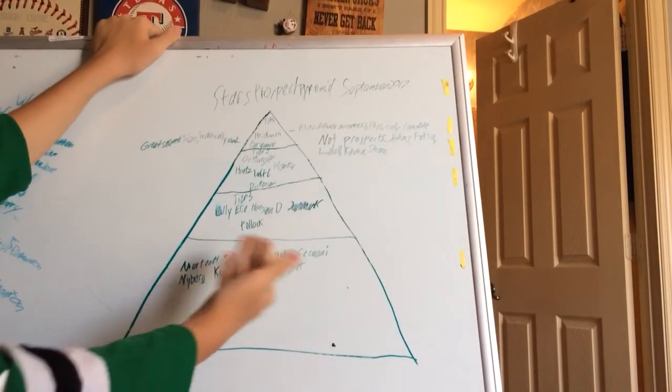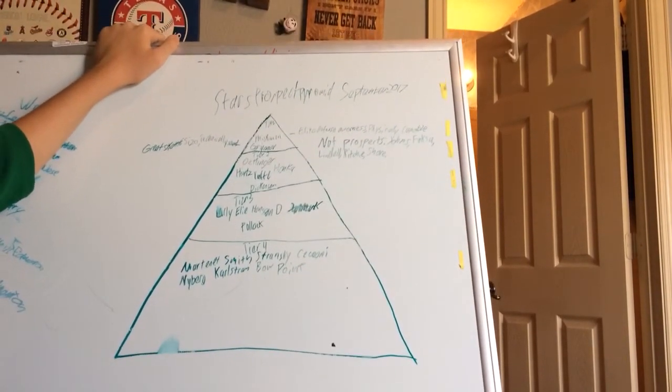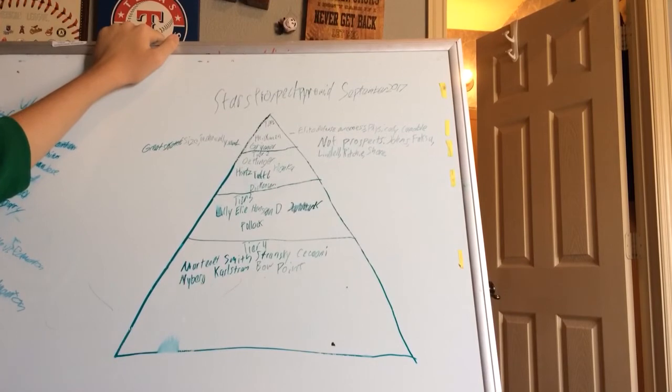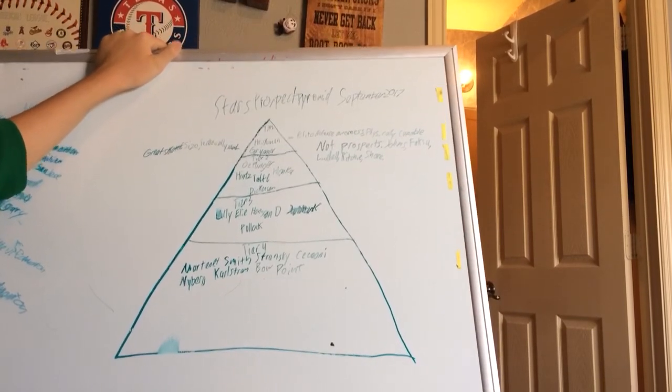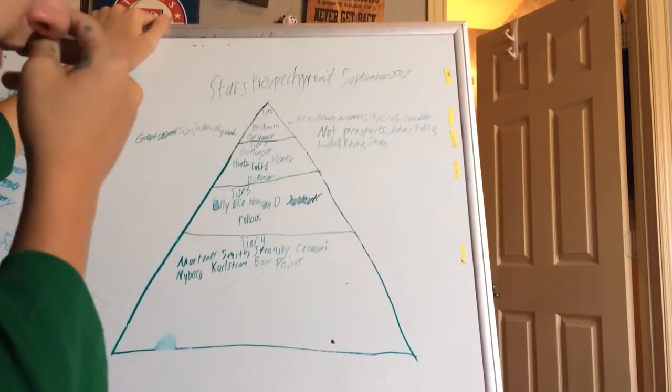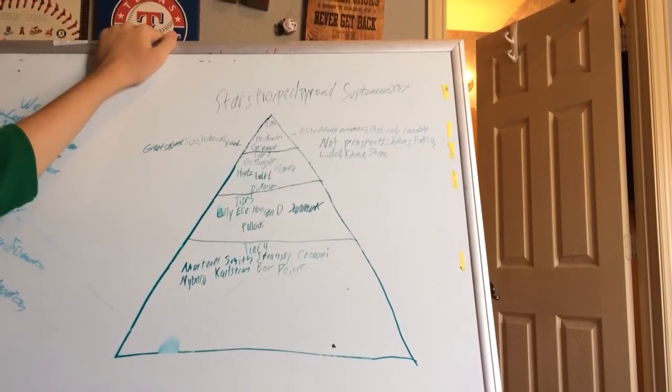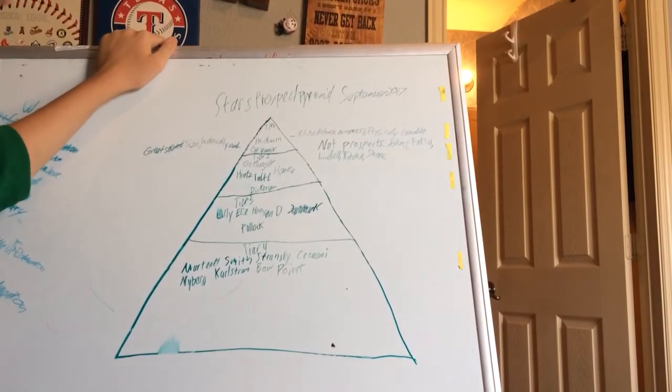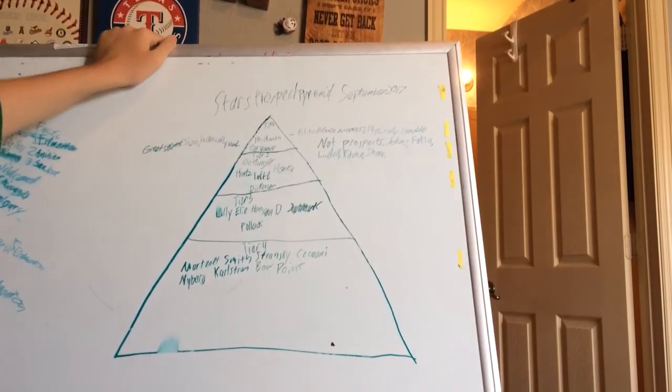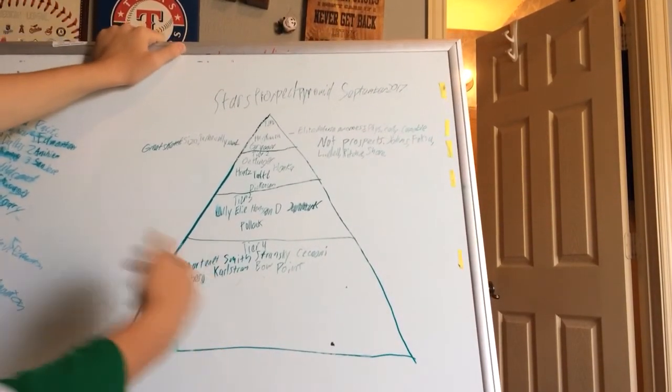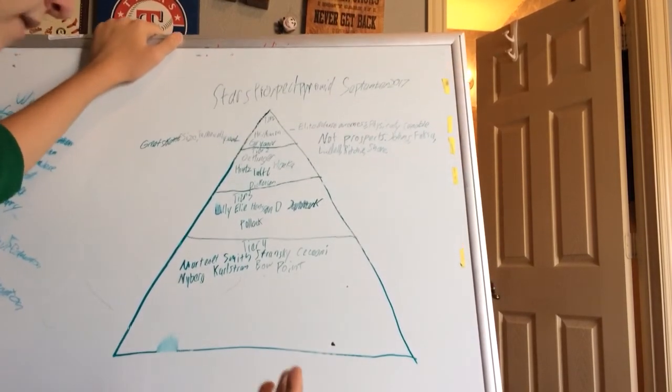Tier 4: Marta Day, Smith, Stransky, Sonny, Nyberg, Karl Strong, and Bowe and Point. Of course, Bowe and Point look great goalie-wise, but I don't think they're going to be much in the AHL. Probably career AHLers. But this tier 4 is probably AHL for careers, but I can still see one of these guys making a full NHL career out of it.